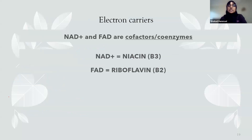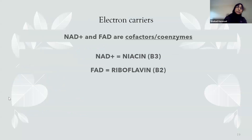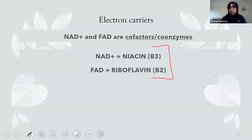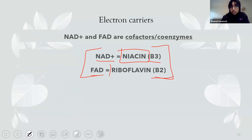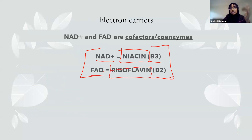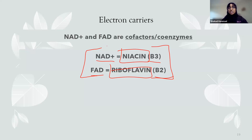Another important thing is NAD and FAD. These molecules come from glycolysis and the Krebs cycle. NAD is vitamin B3 or niacin, and FAD is vitamin B2 or riboflavin — this will be covered more in your vitamins lecture, so you don't need to fully memorize it for this lecture. NAD and FAD are cofactors or coenzymes that aid the reaction.